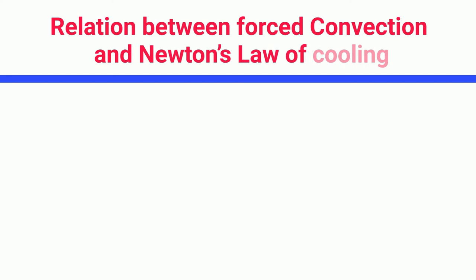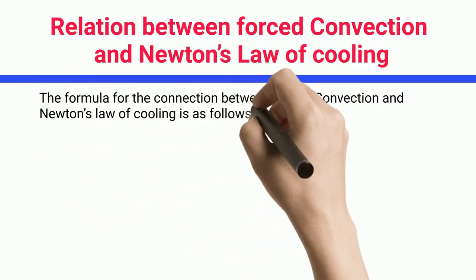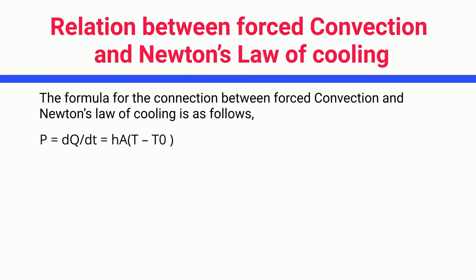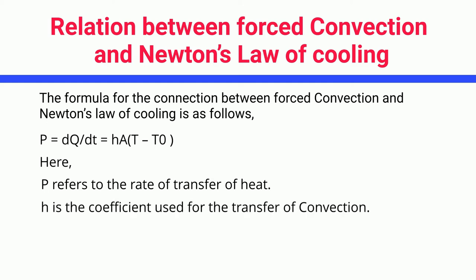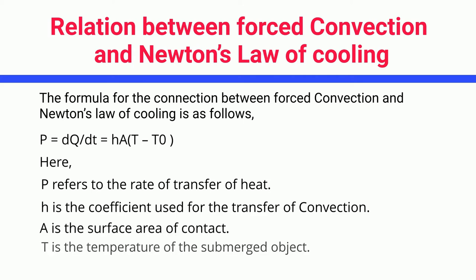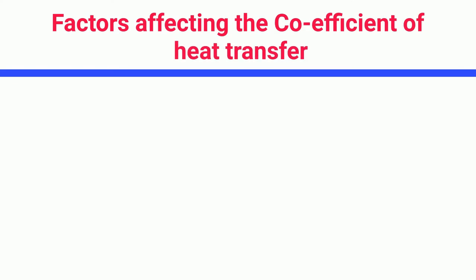Relation between forced convection and Newton's law of cooling. The formula for the connection between forced convection and Newton's law of cooling is: P = dQ/dt = H·A·(T − T₀). Here, P refers to the rate of transfer of heat; H is the coefficient used for the transfer of convection; A is the surface area of contact; T is the temperature of the submerged object; and T₀ is the temperature of the fluid in which convection takes place.